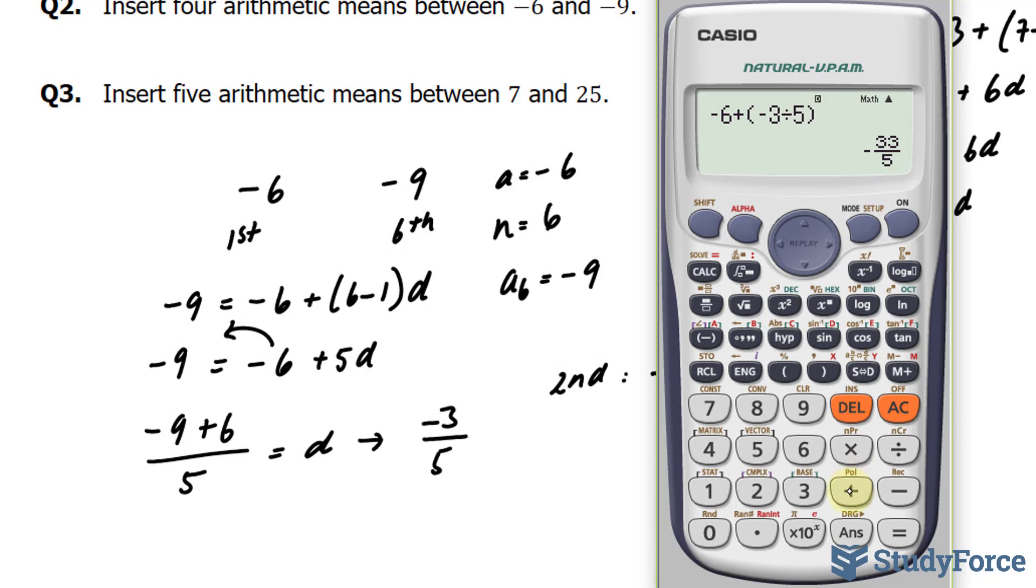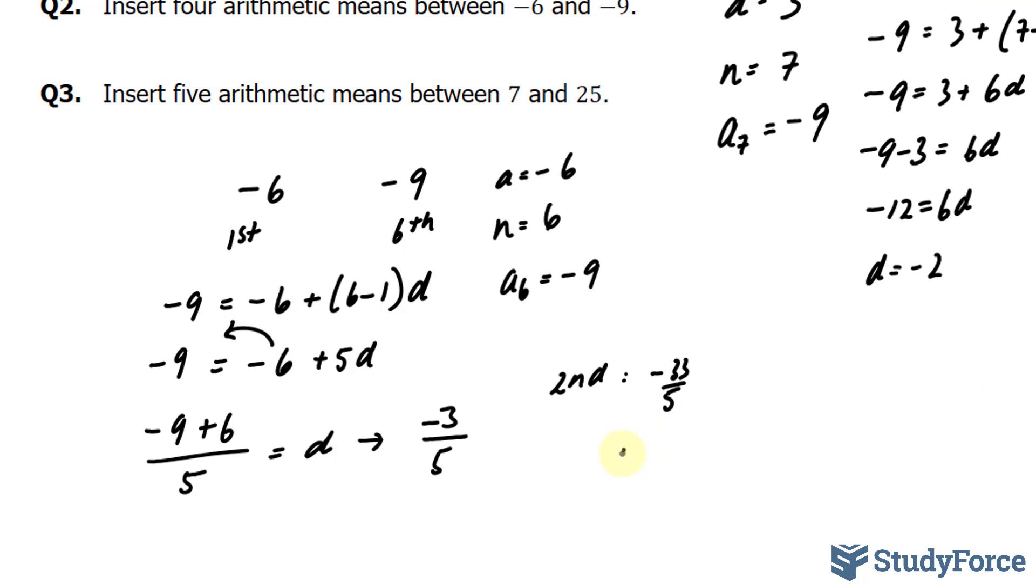Let's add another negative 3 over 5 to that. We get negative 36 over 5. That's the third number.